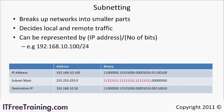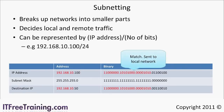The subnet mask is used to determine if the traffic is for a remote network or the local network. To do this, the bits from the IP address and the destination address are compared but only with reference to the subnet mask. In this example, the subnet mask is 24 bits so the first 24 bits of the IP address and the destination IP address are compared. If they match, which in this case they do, the packet is sent to the local network.